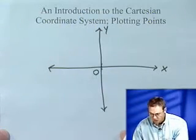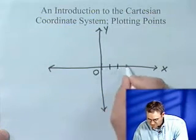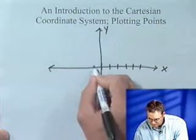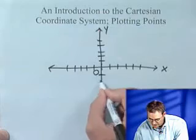I'll label that O, or maybe zero, and we'll just put a few tick marks on each side.